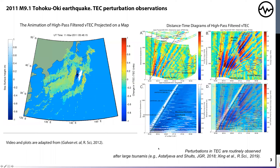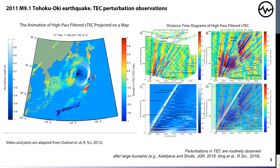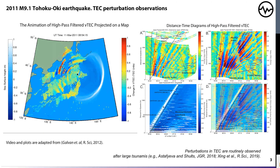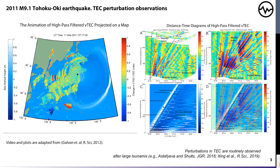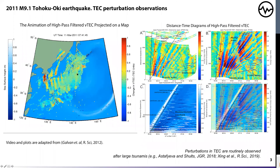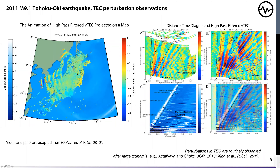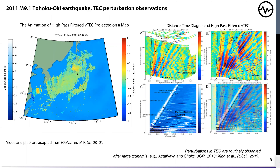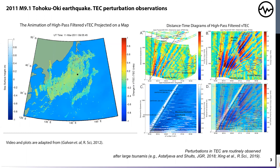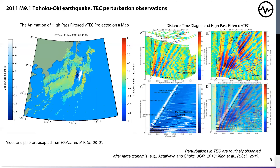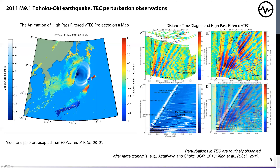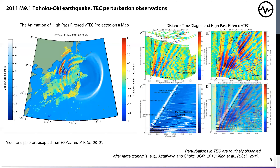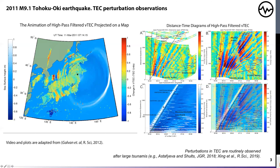I would like to share one example of the detection of these waves. To the left you see an animation of high-pass filtered vertical total electron content projected on a map during the well-known earthquake and subsequent tsunami in Japan in 2011. On the right you see time-distance diagrams of the same data, with distance measured from the epicentral position. First perturbations appeared roughly 10 minutes after the earthquake, which is fairly consistent with the time an acoustic wave needs to reach the layer of the ionosphere propagating from the ground, and their apparent horizontal phase velocities are roughly 1 km per second, consistent with the speed of sound in that layer.